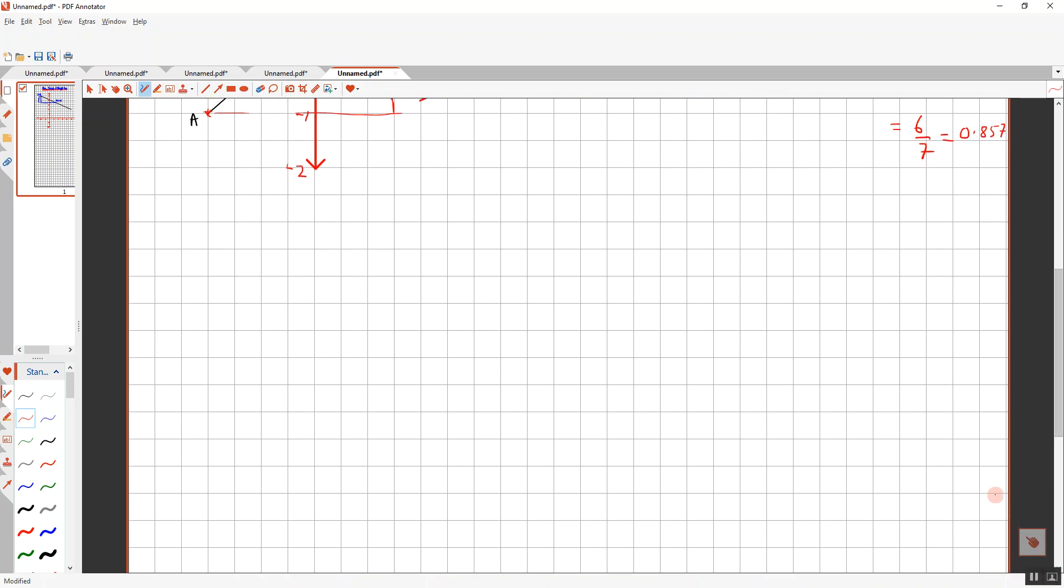The second question that I will do is the following. So for this question, we're going to label our points. So x comes first. We've got x1, this one is y1. We're going to label this one as x2, and we're going to label this one as y2. And we're going to use our formula this time. So remember, our formula is y2 take away y1 over x2 take away x1.